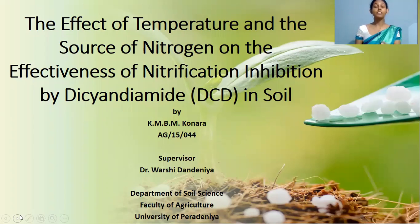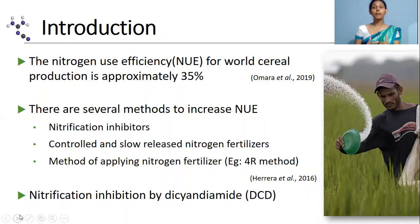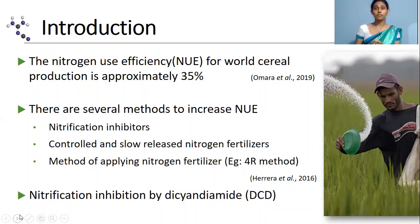First, let's look at the research background. We all know nitrogen fertilization is a crucial requirement in commercial agriculture, but having lower nitrogen use efficiency is one of the main issues related to this nitrogen fertilization. As an example, for world cereal production, the nitrogen use efficiency is around 35 percent.